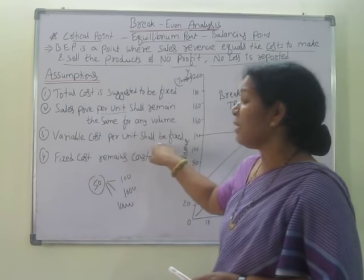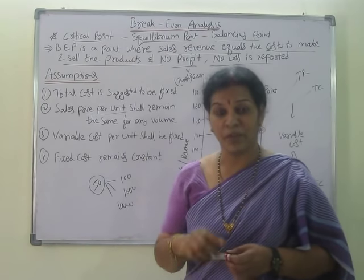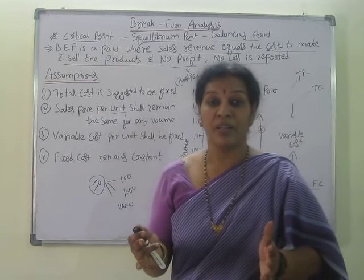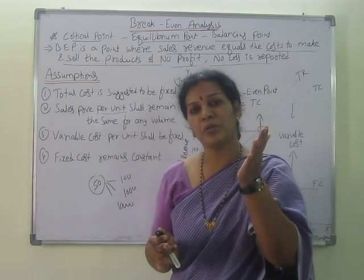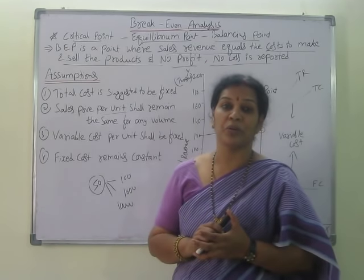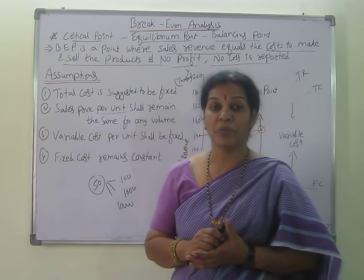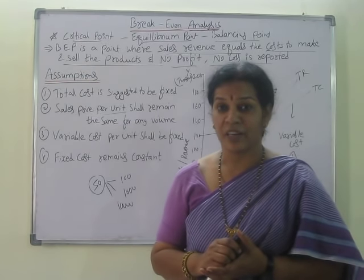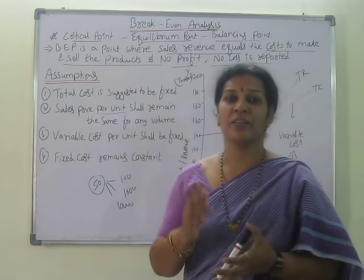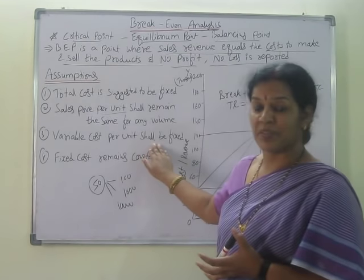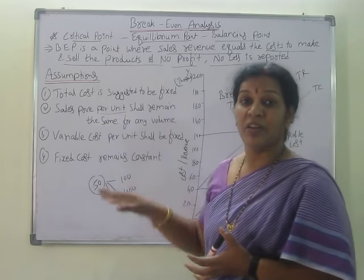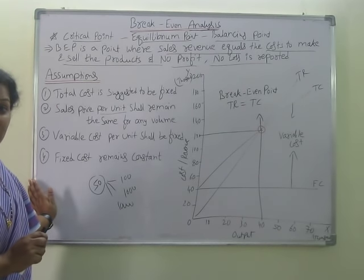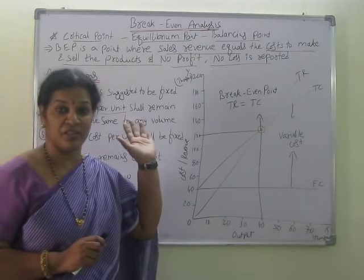Third, variable cost per unit shall be fixed. Variable cost is a cost that fluctuates and is not always consistent, but for breakeven analysis the assumption is that it must be fixed. When fluctuations are there, it will not work out properly. Examples of variable cost include wages, repairs, transportation, packing, and advertising — all these must always be fixed. The fourth assumption is that fixed cost remains consistent and must always be unchangeable. Only when these assumptions are followed will breakeven analysis work out.